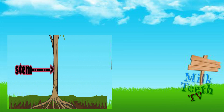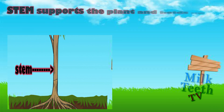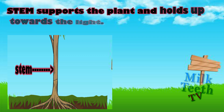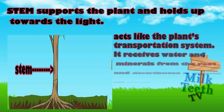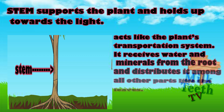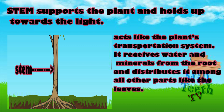The first and most important part of the plant is the stem. The stem supports the plant and holds it up towards the light. It acts like the plant's transportation system — it receives water and minerals from the root and distributes it among all other parts like the leaves.